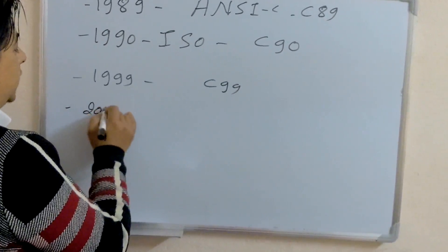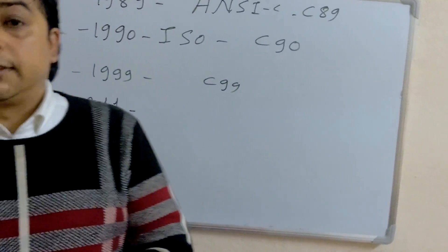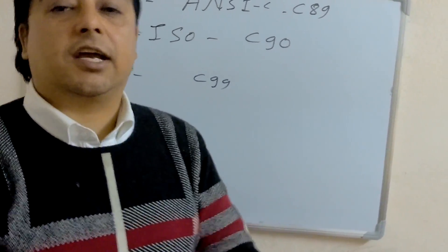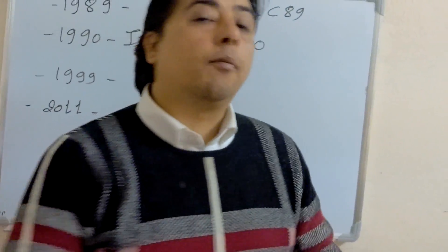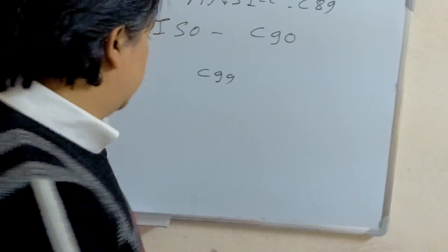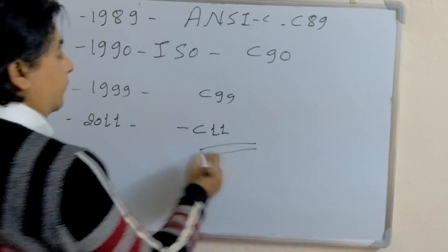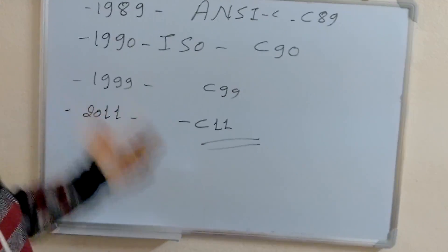In 2011, several features like generic macros and atomic operations were also added in C programming. So, this C programming, known as C11, this is the ANSI C standard.